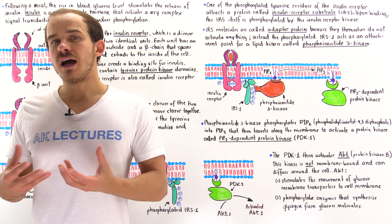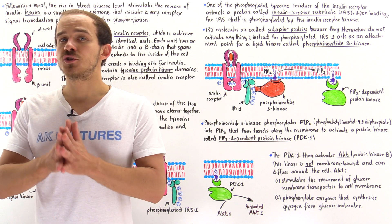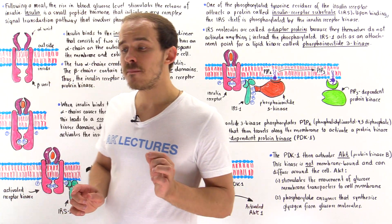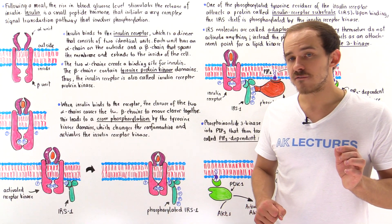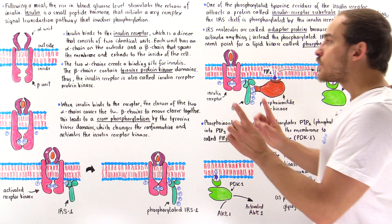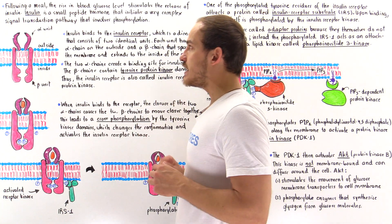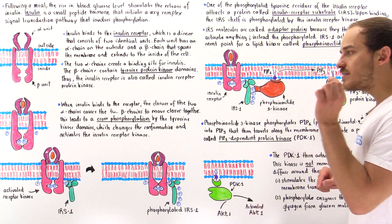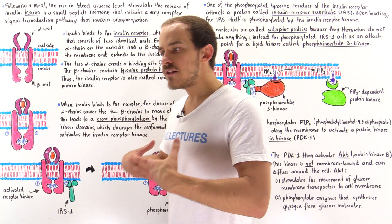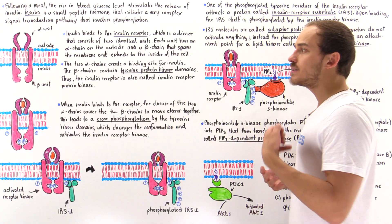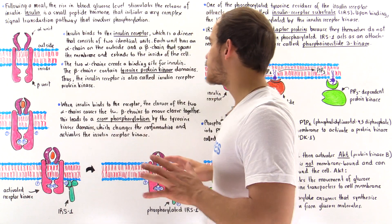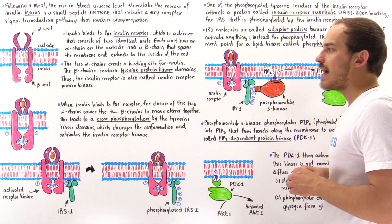What insulin does is initiate this signal transduction pathway. The signal transduction pathway is actually very complicated, complex, and extensive. What I'd like to focus on in this lecture is a small section of this insulin signal transduction pathway that stimulates the absorption of glucose by the cells and the subsequent transformation of glucose into the glycogen form. So let's see exactly how that takes place.